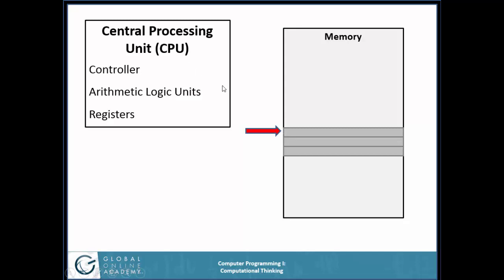The central processing unit will go and pull in the next instruction. That instruction might be to pick some data out of a specific point in memory — maybe it's here or here or here — take this piece of memory and add it to whatever is in this other piece of memory, and store it somewhere else.